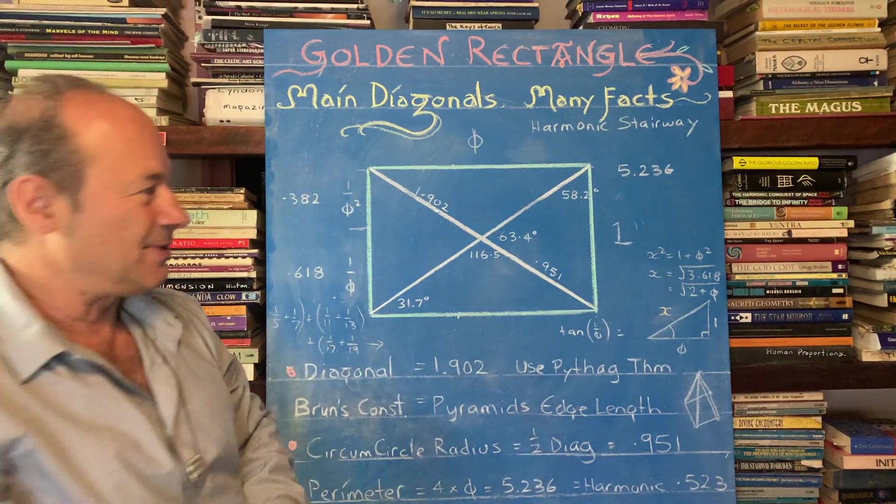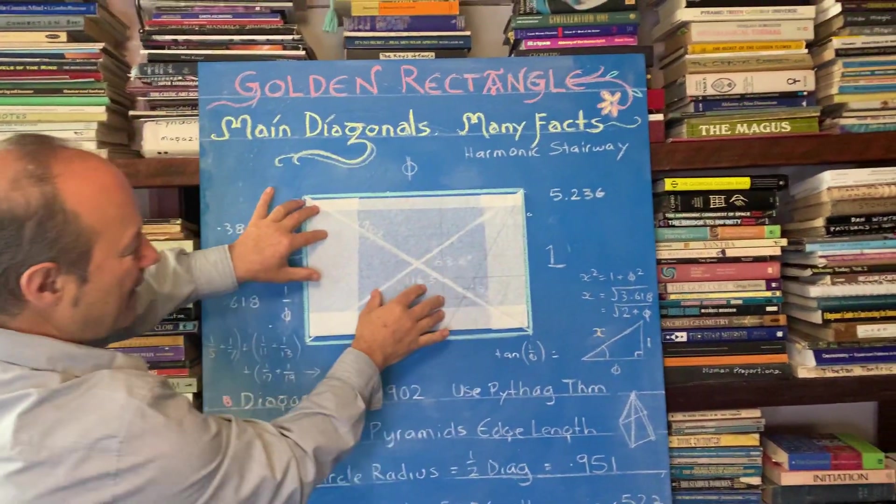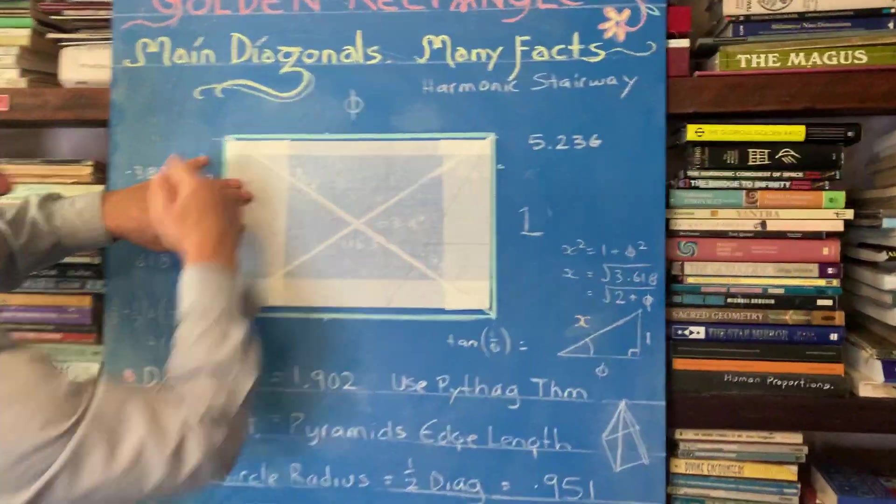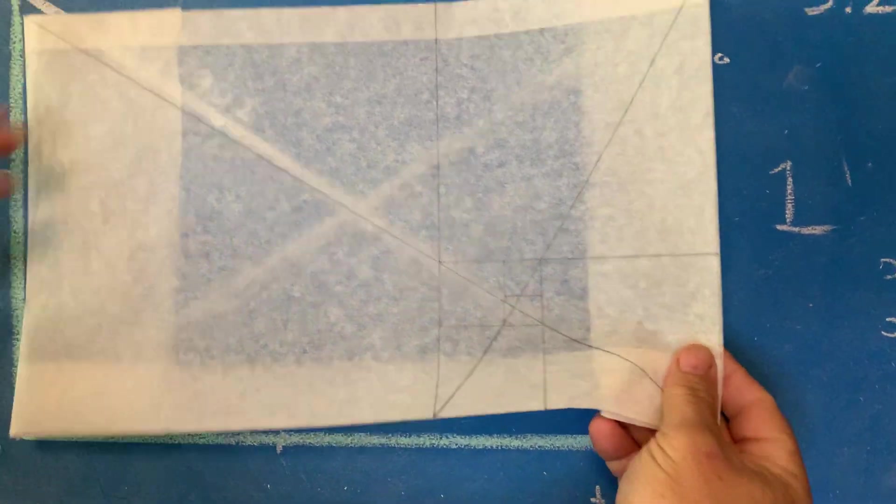And to do that, we need to get grids happening. So to get the grids happening, you can see that what I'm showing you here is pretty correct. Excuse the thickness of the chalk, but this is a good size. It's a perfect golden rectangle.